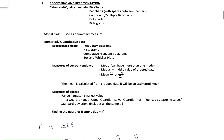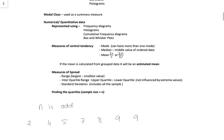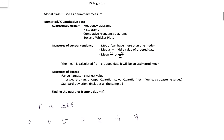For qualitative data you can use bar charts, compound or multiple bar charts, dot charts, pictograms, and the modal class is used as a summary measure. For numerical and quantitative data, you represent it using frequency diagrams, histograms, cumulative frequencies, and box-and-whisker plots. Measures of central tendency are mode, median, and mean. If the mean is calculated from grouped data it will be an estimated mean, because we assume data points are in the middle or evenly spread within each group.